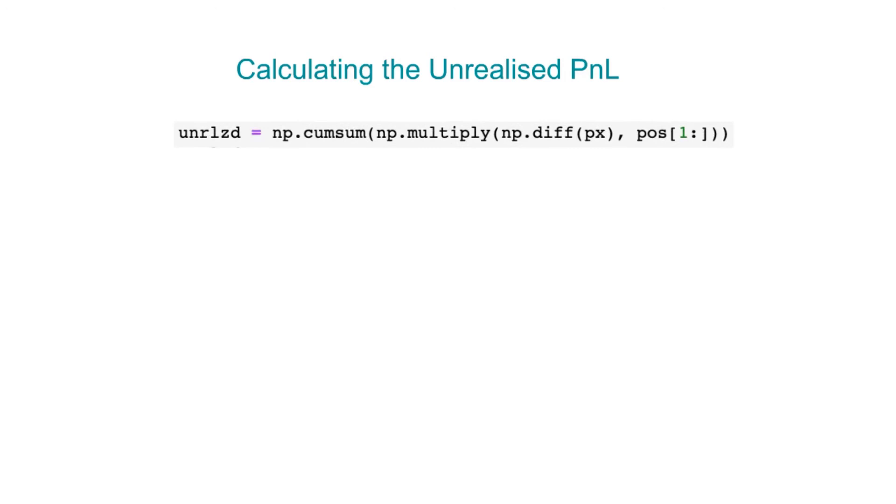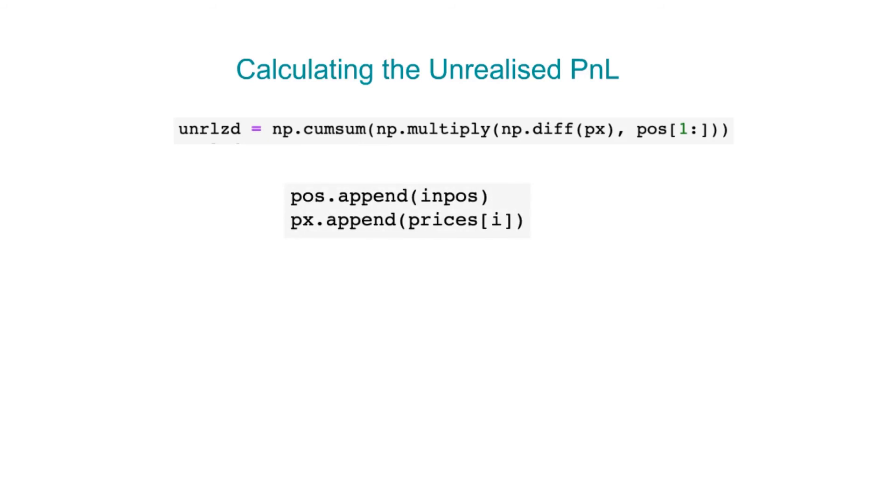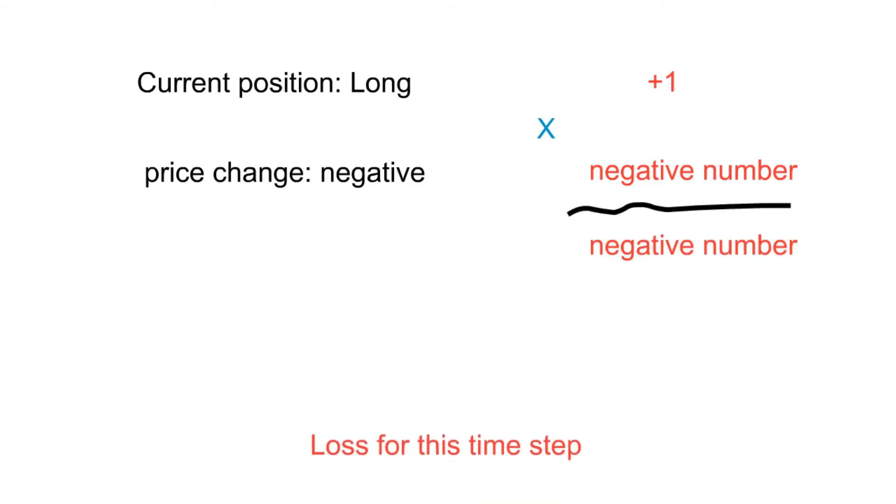For the unrealized P&L, we only need this one expression, which contains a list of prices px and a list of positions pos that are recorded during the backtest. So what's going on here? In the unrealized P&L expression, we multiply the price change from the previous to the current price with the current positions and take the cumulative sum of all the products. So if our position is long or plus one and the price change is negative, we record an incremental loss at the time step and vice versa.